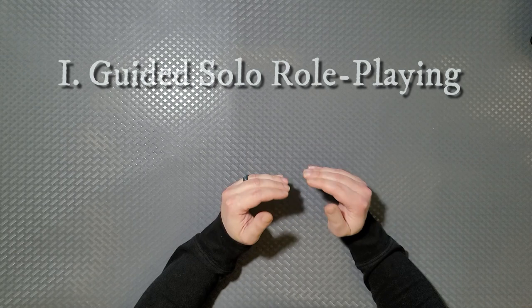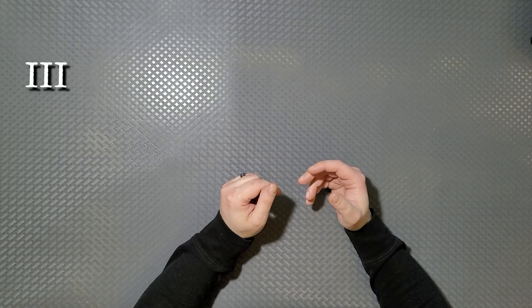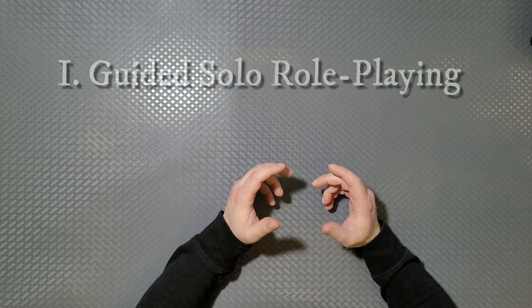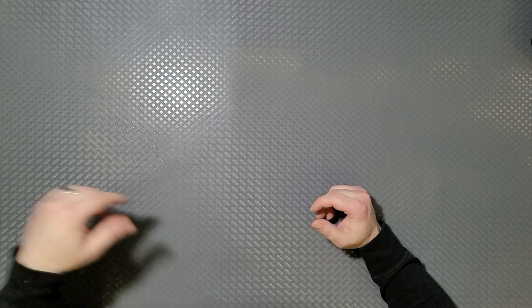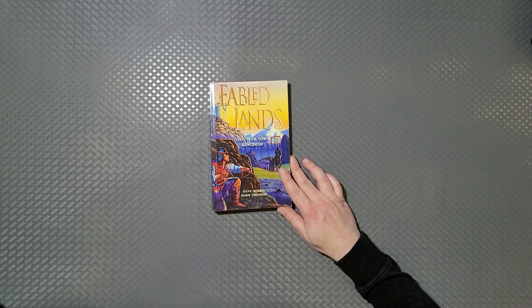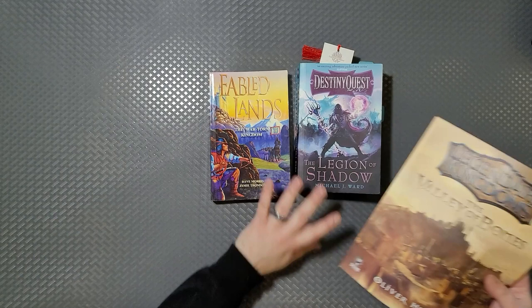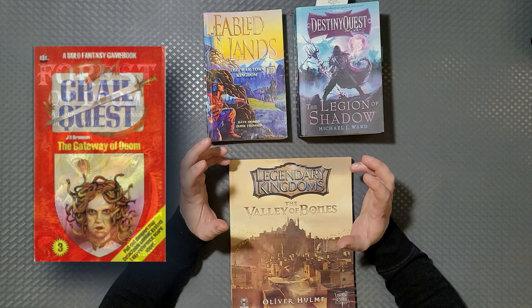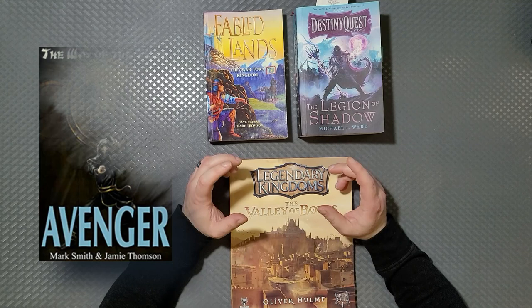So we're going to start on the shallow end. At the shallow end, we have the guided solo roleplaying. And so for guided solo roleplaying, we need to start looking at things like game books. So for game books, some good examples would be like the Fabled Land series. Or we have the Destiny Quest series. Legendary Kingdoms. We have like Fighting Fantasy. And of course, there's many other game books that you can get into. A lot of these game books are semi-linear and some of them are open world.